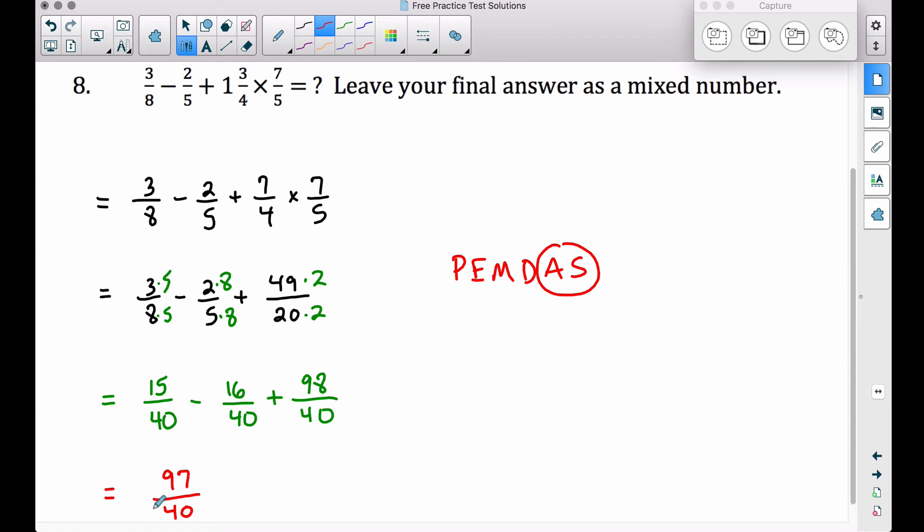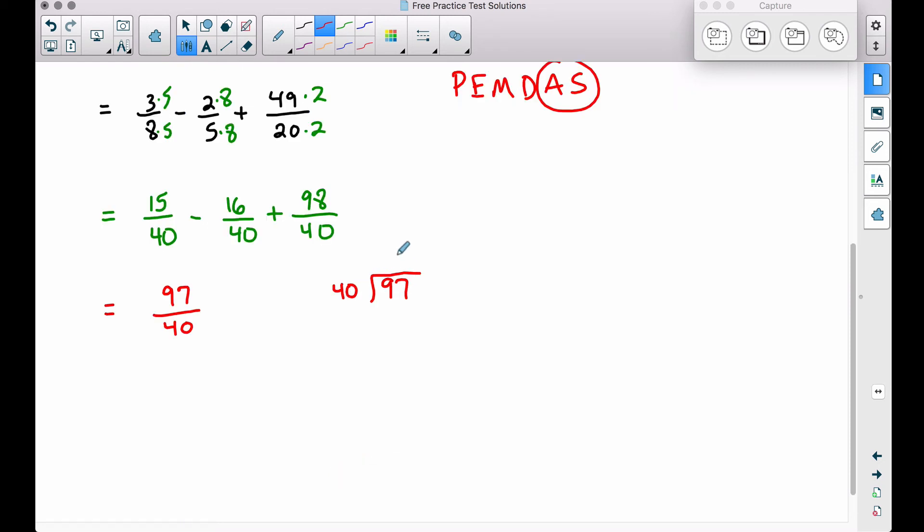Now, this is an improper fraction. Our directions say to leave your answer as a mixed number. Therefore, we can perform some long division to convert this improper fraction to a mixed number. The way I remember my long division is we take the inside divided by the outside. So let's put the forty on the outside. Forty will go into ninety-seven two times because two times forty is going to give you eighty. We cannot go three times because we would be past ninety-seven. Let's find the difference here. Subtracting these, we get a remainder of seventeen.